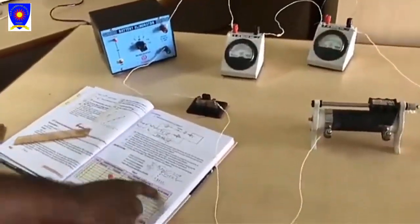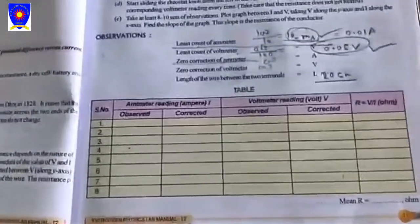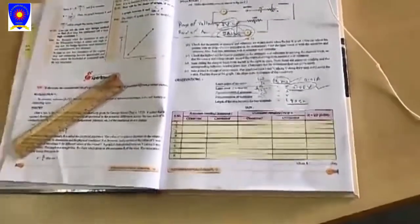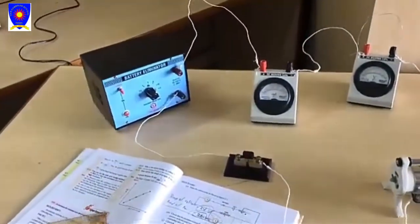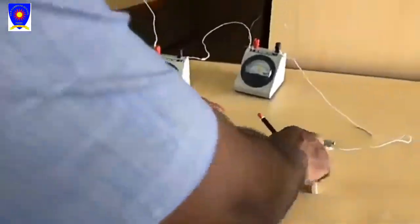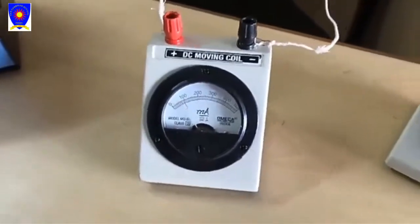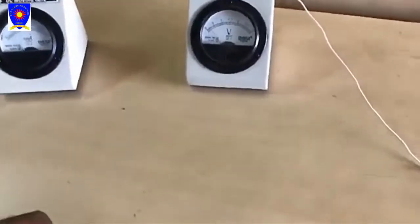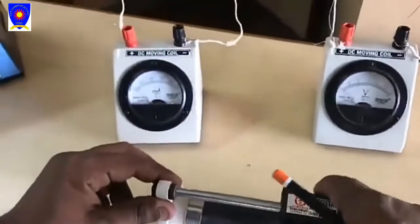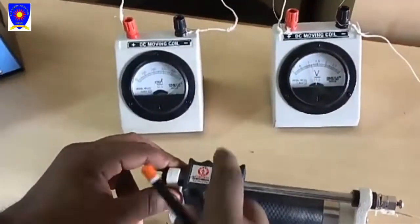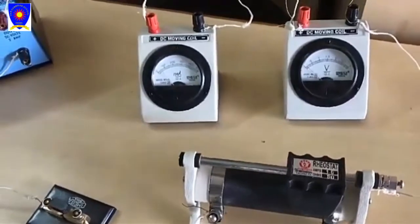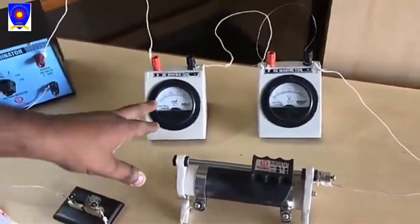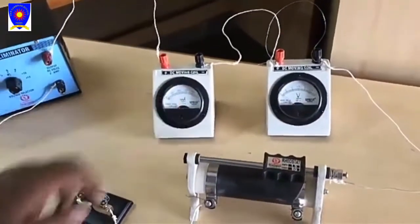There are tables for the observation. Now we have to know how to perform this practical. Firstly we have to switch on from the main connection, and this is also a power point. Now switch on power point, and this is a rheostat. If we slide the rheostat, then we are looking that there are deflections in milliammeter and in voltmeter also. We are sliding - there are deflections in both. It means that connection is correct.